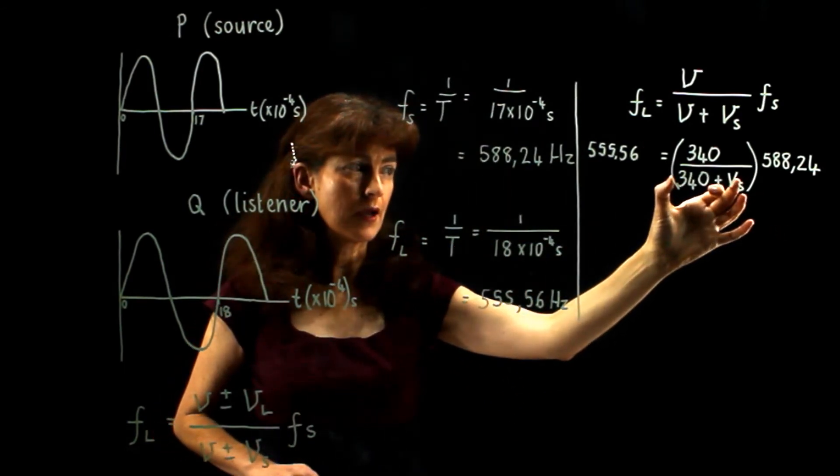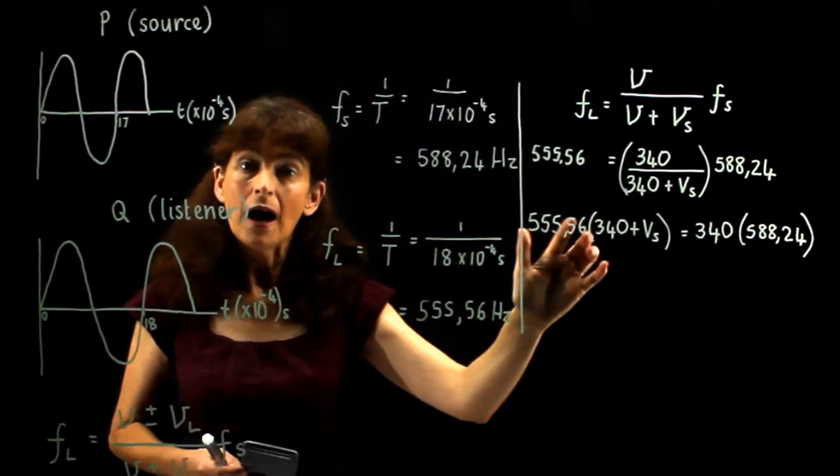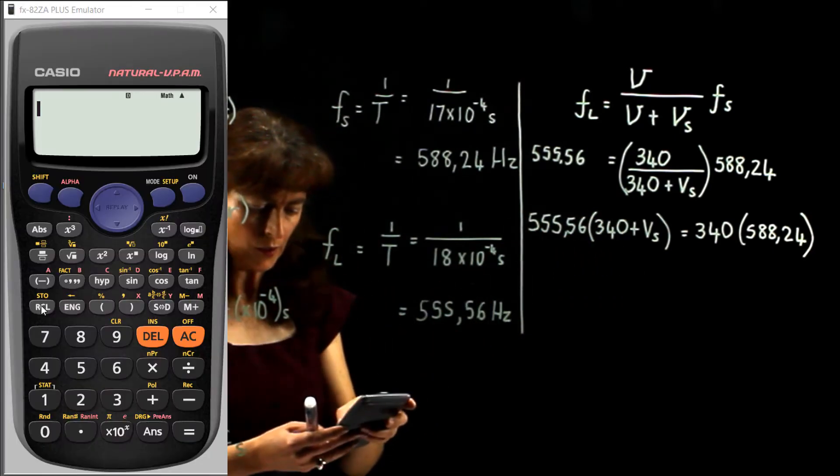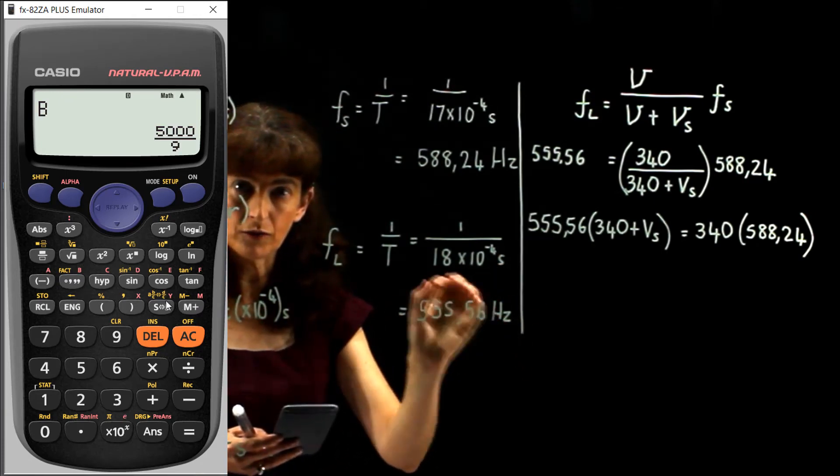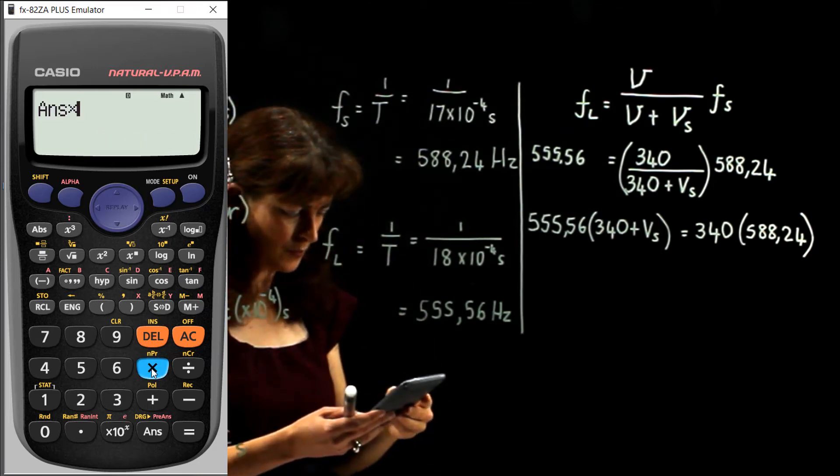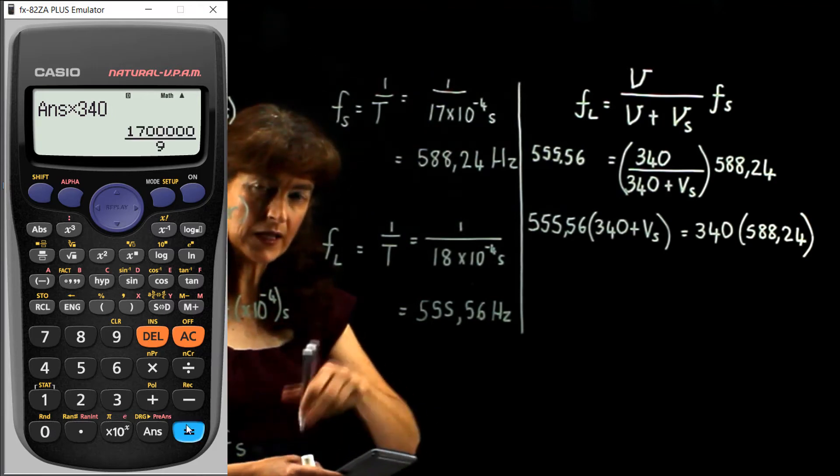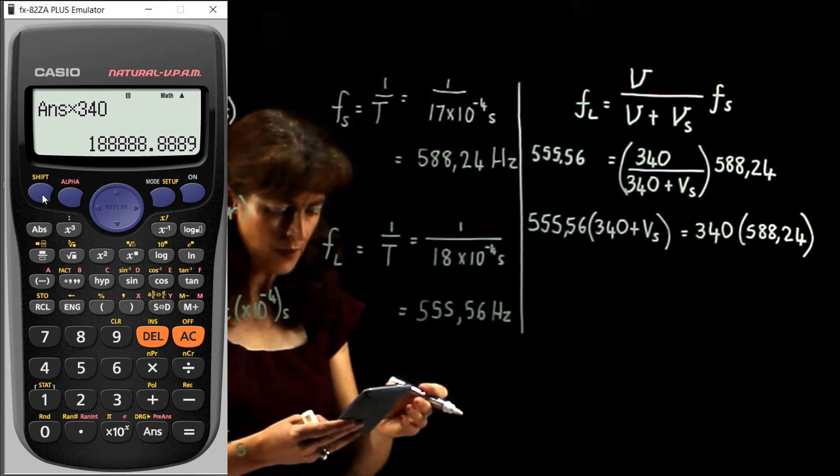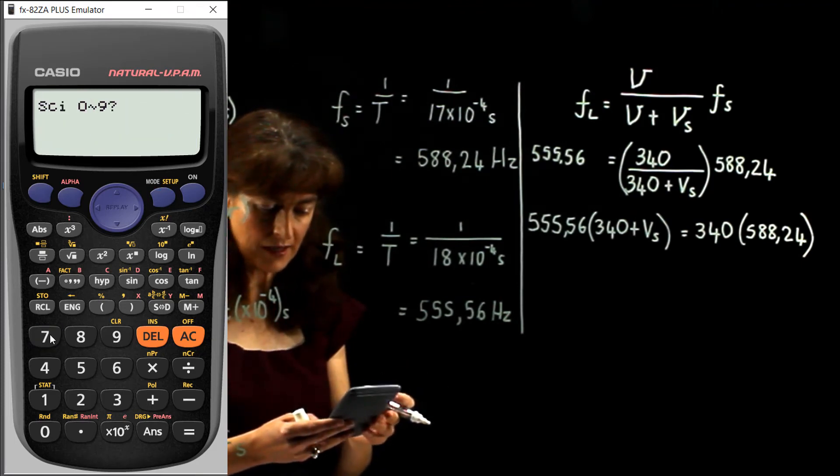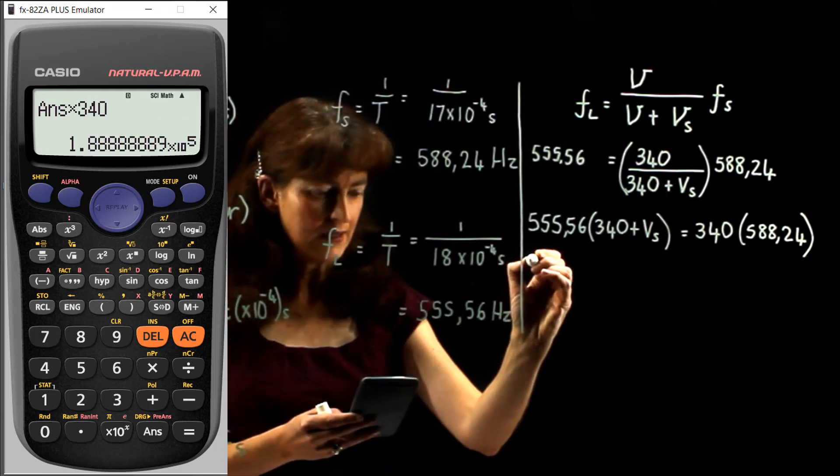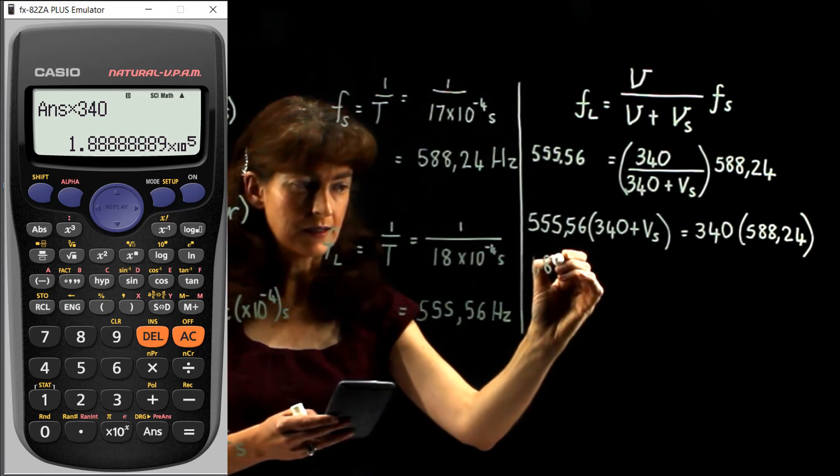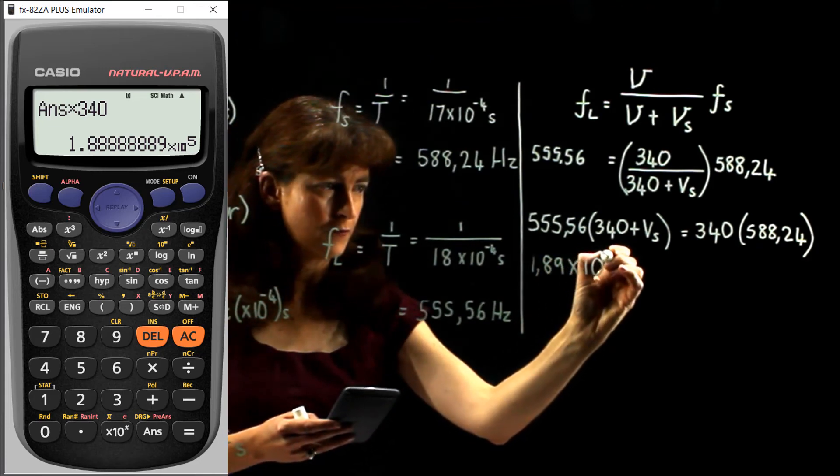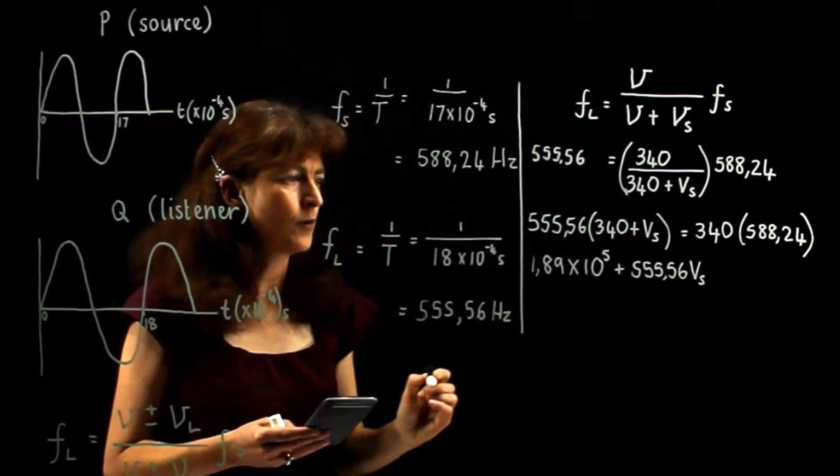To clear the fraction we multiply both sides by this. I still have this value on my calculator so I can simply say multiply by 340. If you have cleared your calculator, you press recall B and up comes B. Remember, we placed this into variable B and this one into variable A, multiplied by 340, and we get a rather large number. If your calculator is not yet in scientific notation, put it in shift mode 7 for scientific notation, then 9 to show all 9 digits. We see that the answer is 1.89 times 10 to the power 5 plus 555.56 VS.